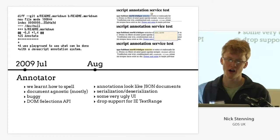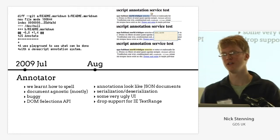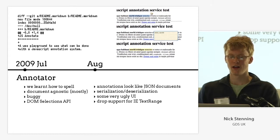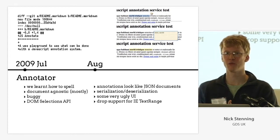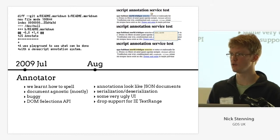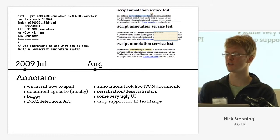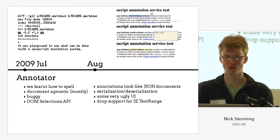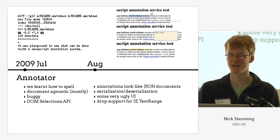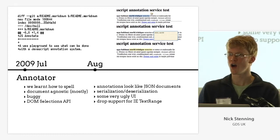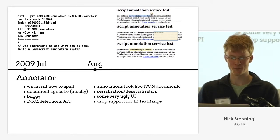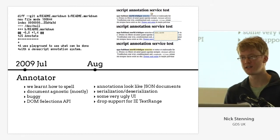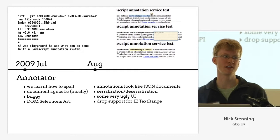So in the summer of 2009, we learned how to spell, and we started a project called Annotator with an O. The aim was to build something that was slightly more document-agnostic — that is, it didn't need you to insert tags into the documents you wanted to annotate. Up in the top left of the screen is the first git commit to the annotator repository, in which I describe it as 'a wee playground to see what can be done with a JavaScript annotation system.' It was incredibly buggy, and it essentially remains still built around the DOM selections API.